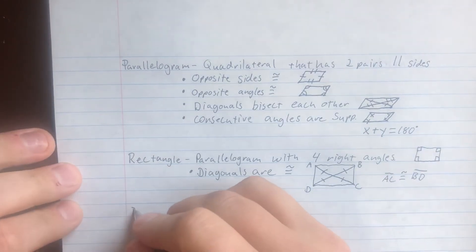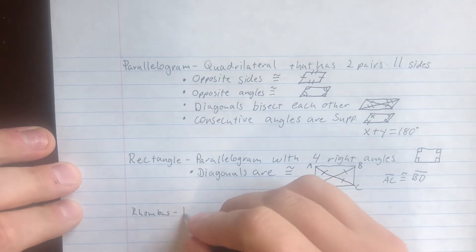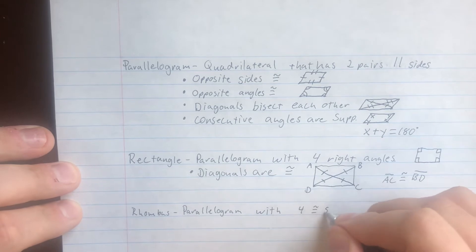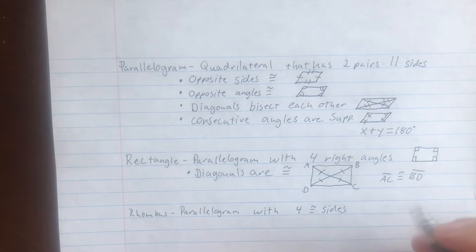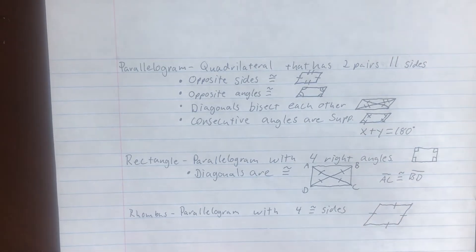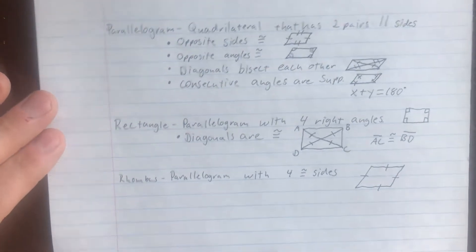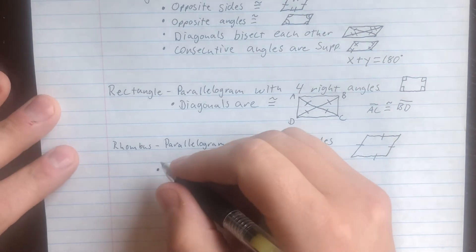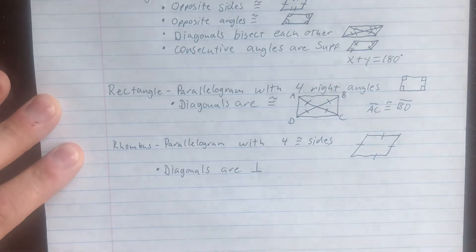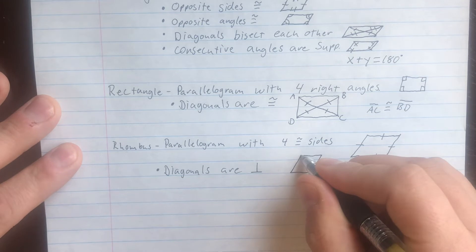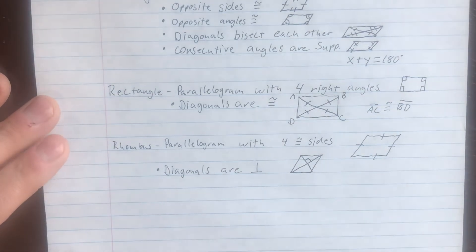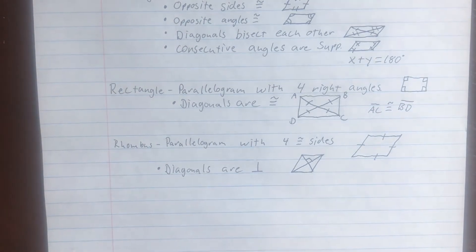Next is a rhombus. It's also a parallelogram and it has four congruent sides. In the diagram, it still looks tilted like a parallelogram, except all four sides are the same length. It has some special characteristics: the first one is the diagonals are perpendicular — using the upside-down T symbol. In the diagram, the diagonals intersect at a right angle, which is 90 degrees. With that right angle, we also have right triangles, so you might need to use the Pythagorean theorem to find missing pieces.